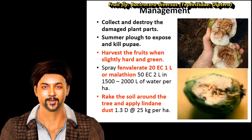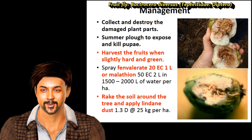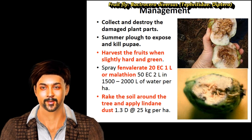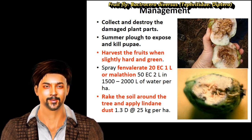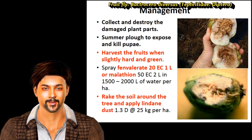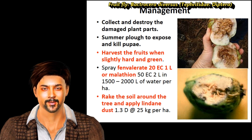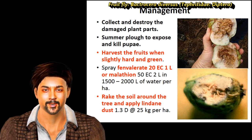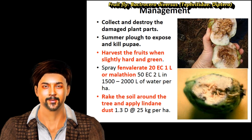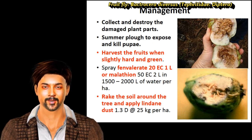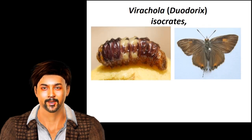For management of fruit fly, collect and destroy the affected fruits. Do summer ploughing to expose and kill the pupae. Harvest fruits when they are slightly hard and green. You can use chemicals like fenvalerate, malathion, or lindane dust at the recommended rate.